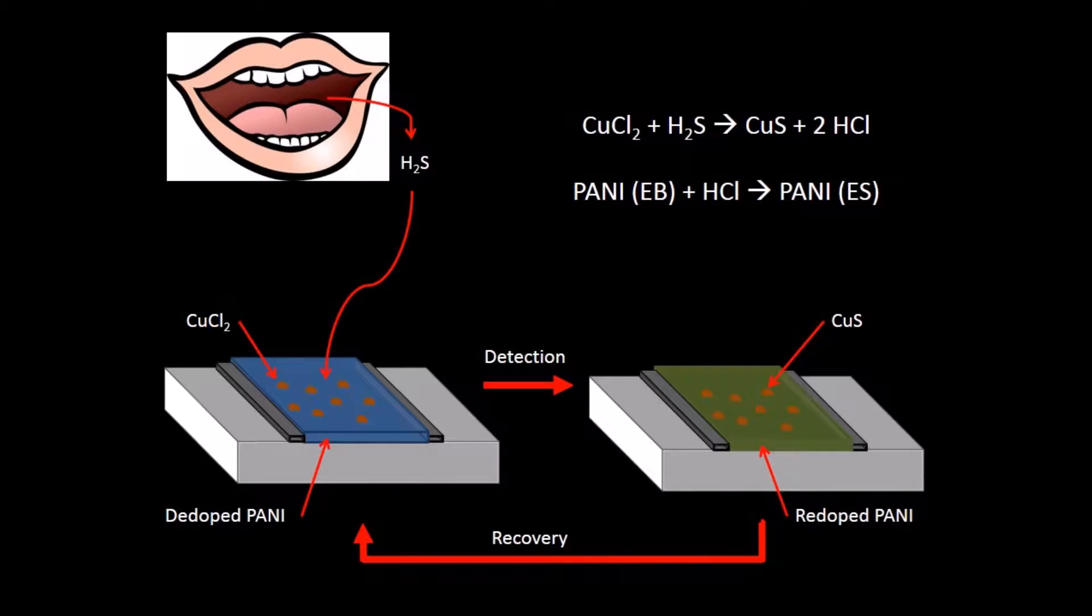The most prominent of these sulfurous compounds is hydrogen sulfide, H2S. This molecule is very reactive, and we made use of this by harnessing its reaction with copper chloride to form copper sulfide and hydrogen chloride. We embedded the copper chloride in a de-doped polyaniline film so that the production of hydrogen chloride re-doped the film, significantly increasing its conductance.